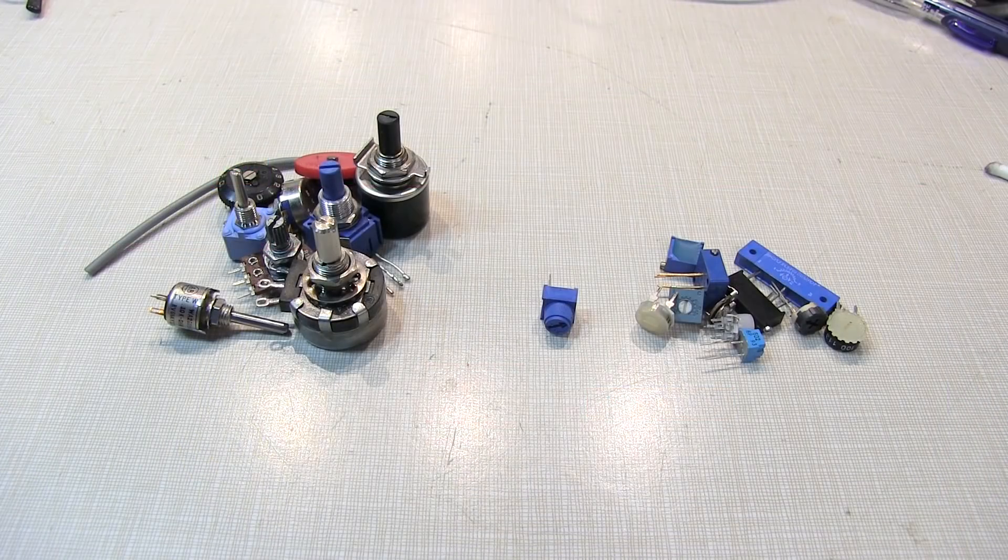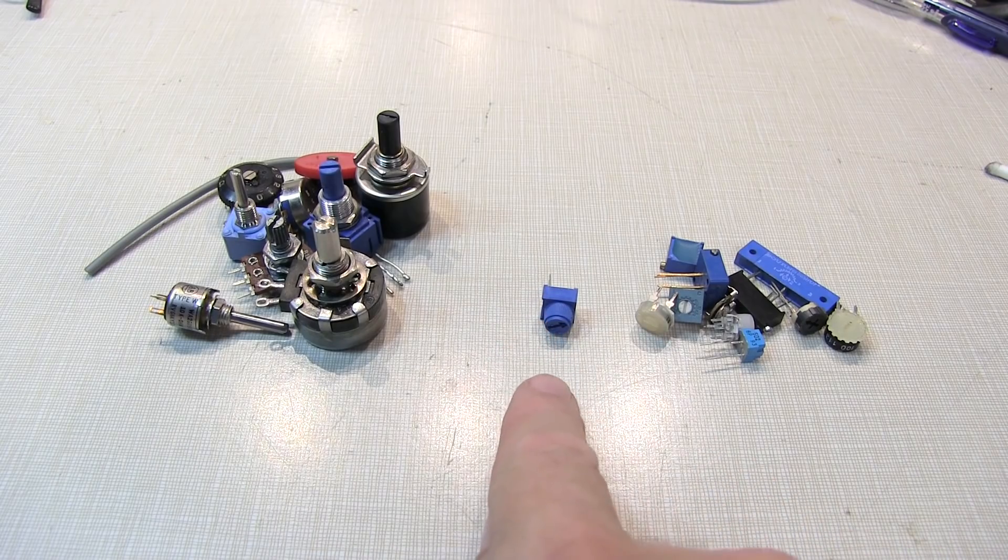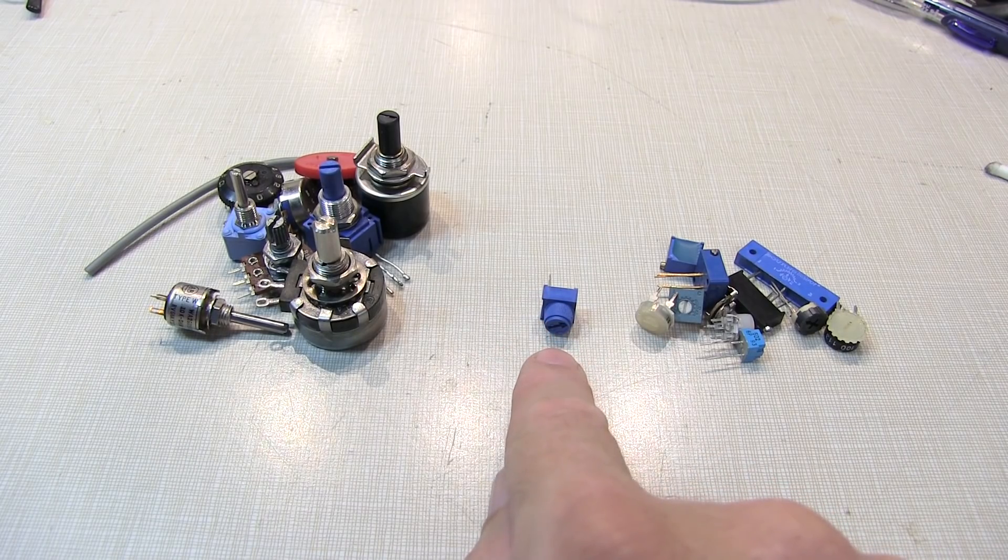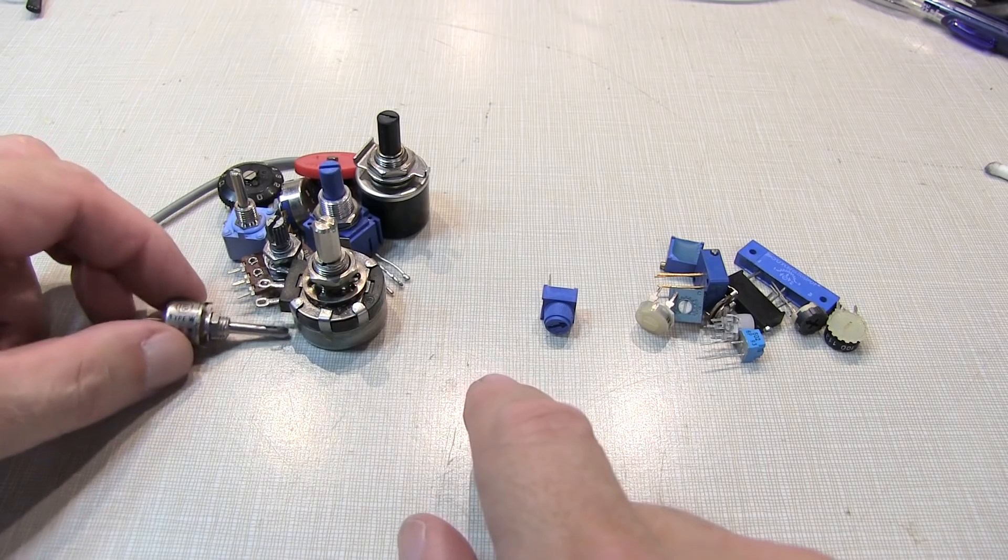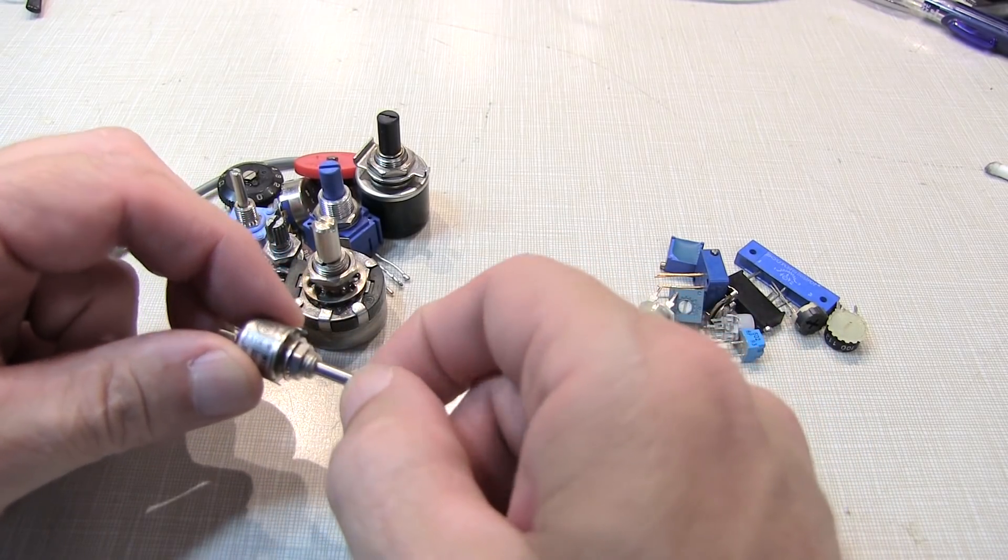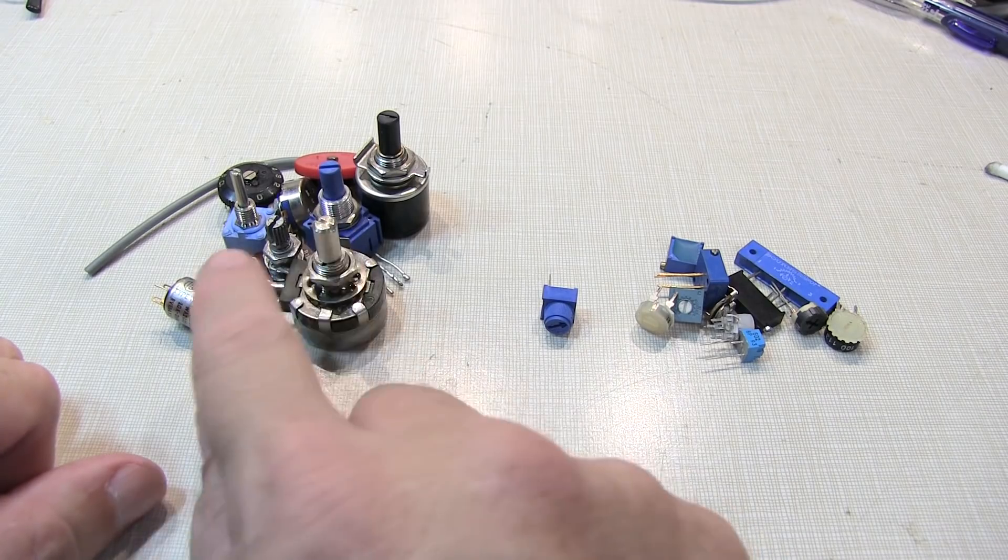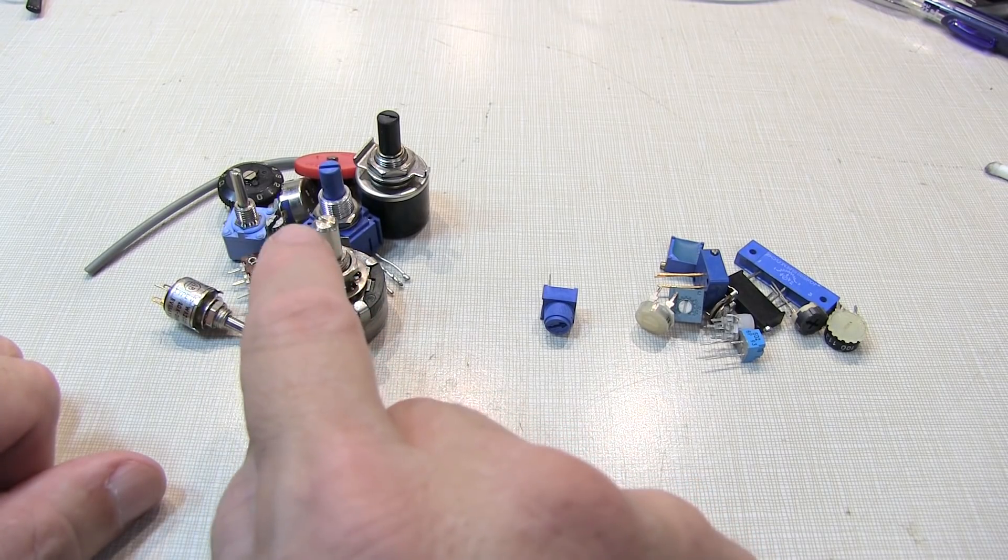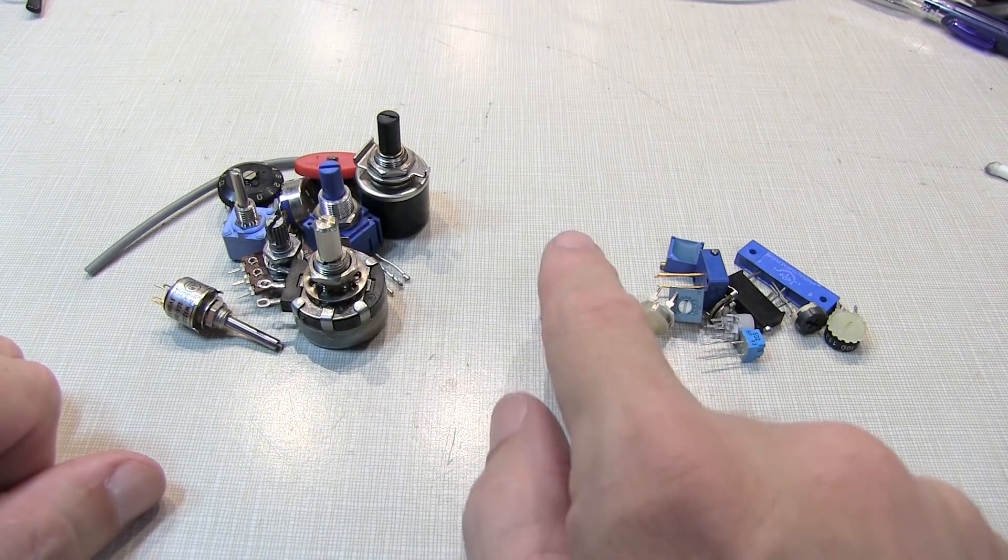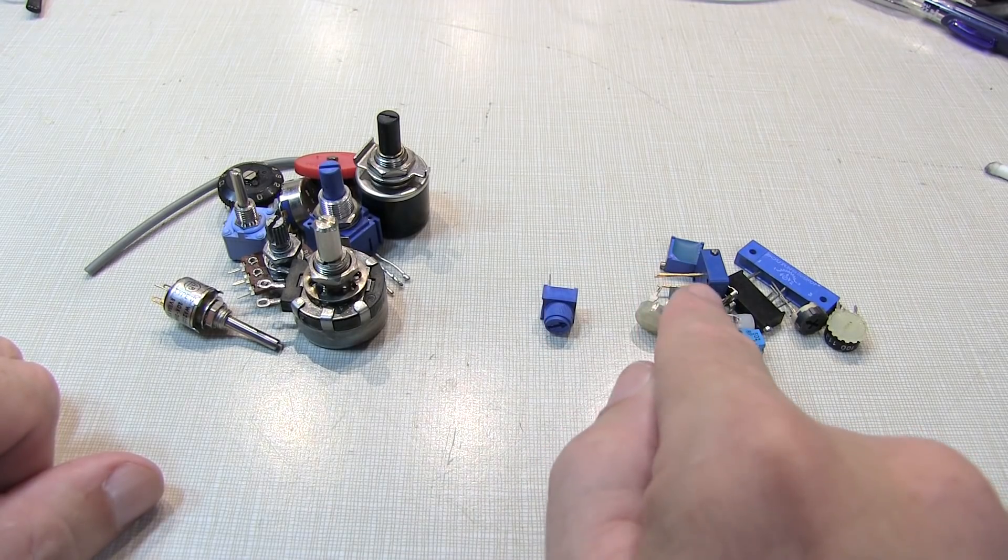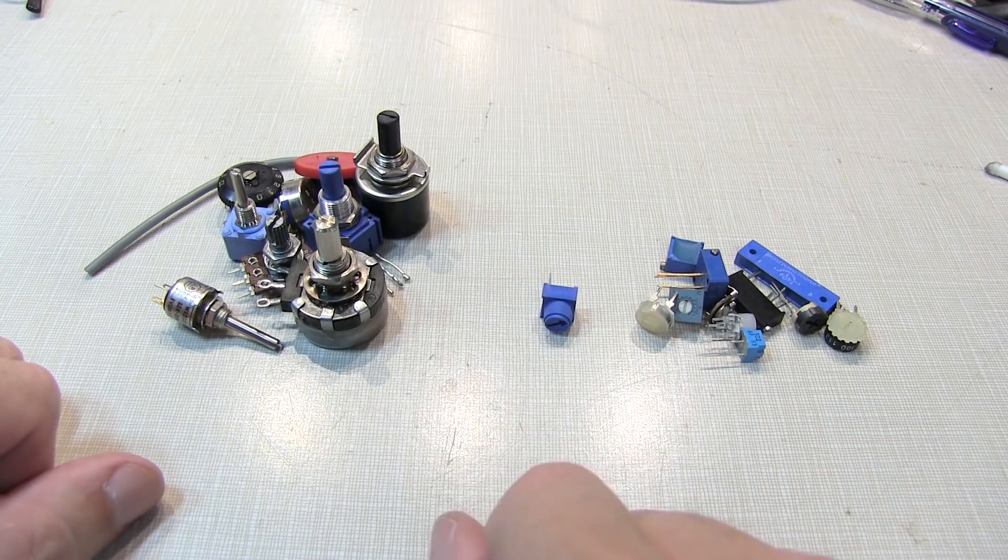So as my friend Dave Jones from EEVblog would say, this is one of those cases that could be a trap for young players. So just take some care when picking the devices that you're going to be using in your projects, particularly things that are going to be adjusted more often. And be sure you're using a device that's rated as a control versus a device that's rated as a trimmer but disguised as a control.